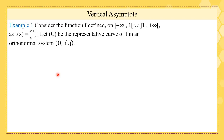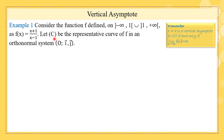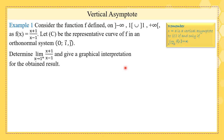Now let's take an example about a vertical asymptote. We have the function f and C is its representative curve. Remember, x equals a is a vertical asymptote if and only if the limit as x tends to a is infinity. The question is to determine this limit and to give a graphical interpretation for the obtained result.